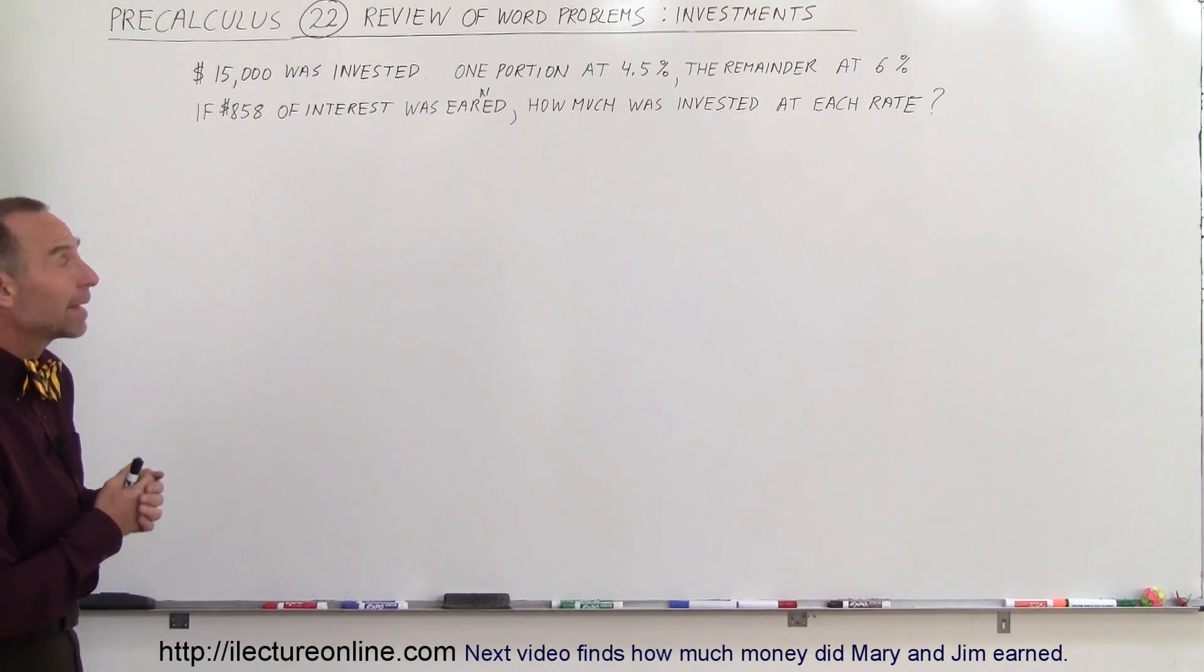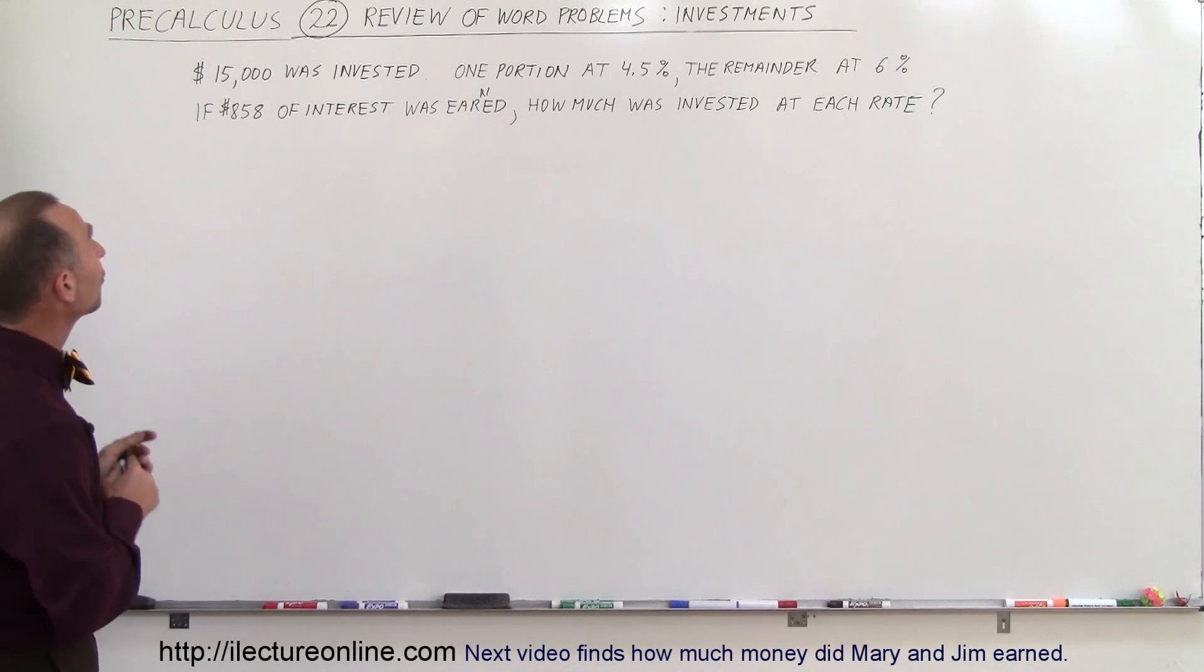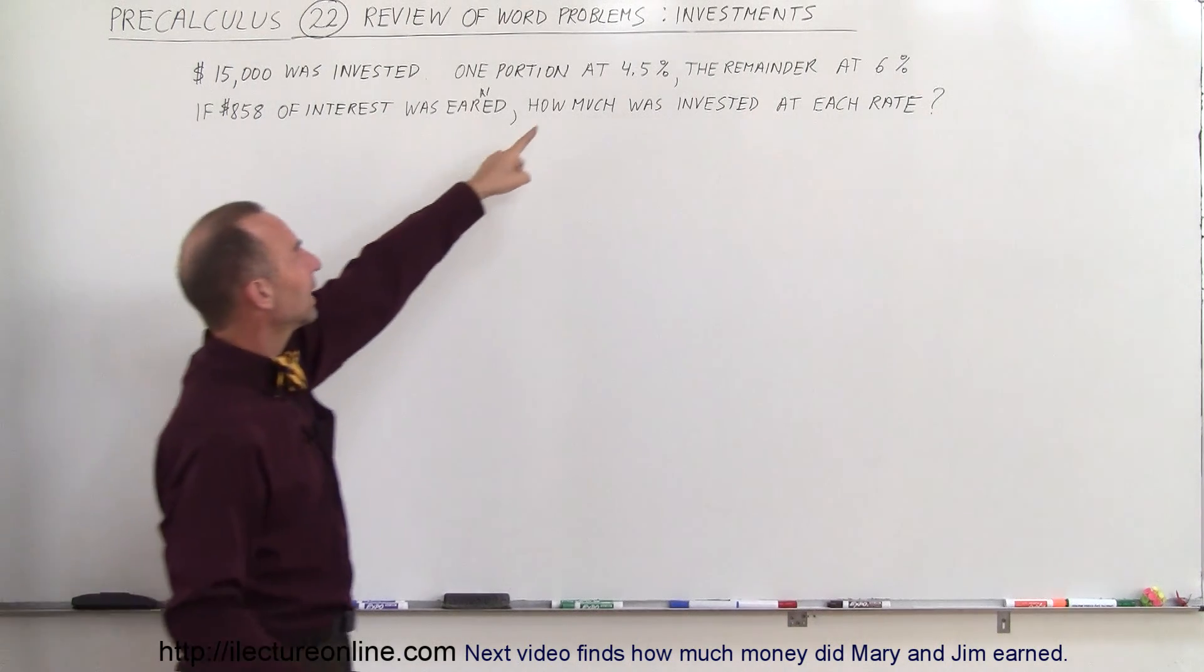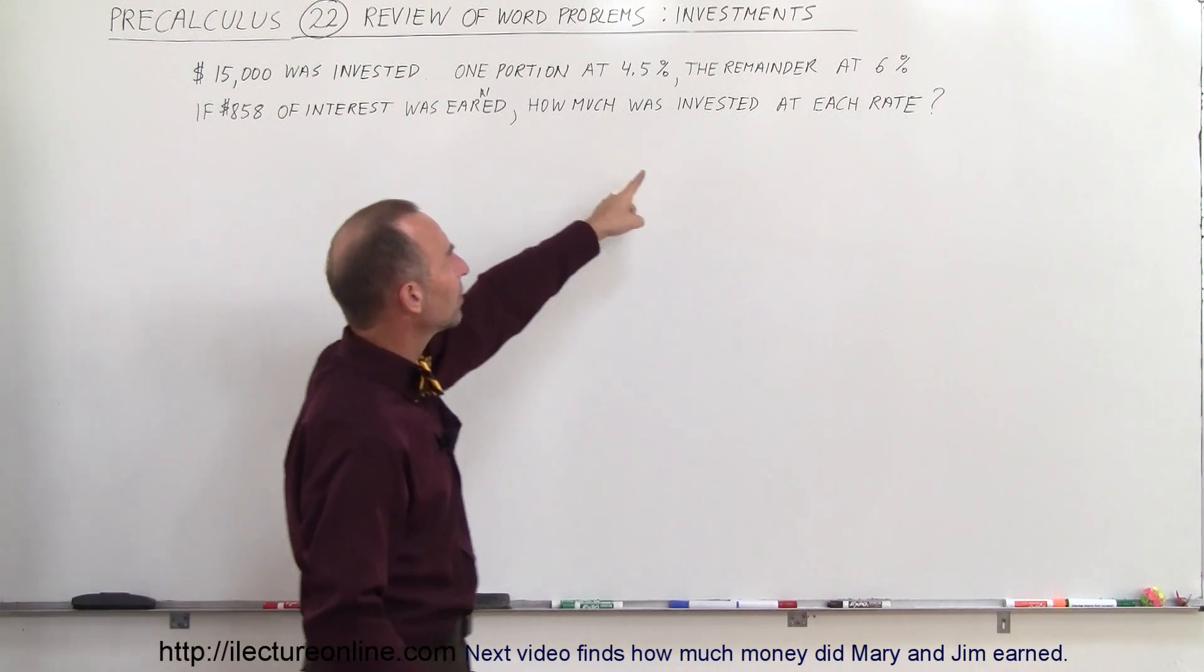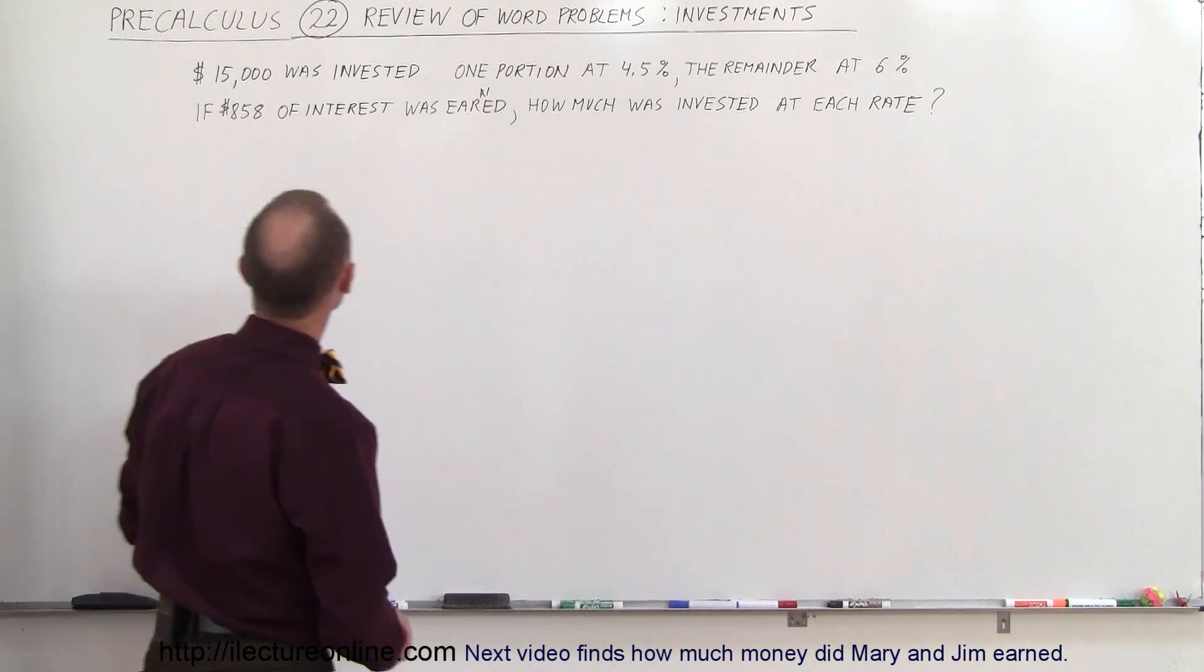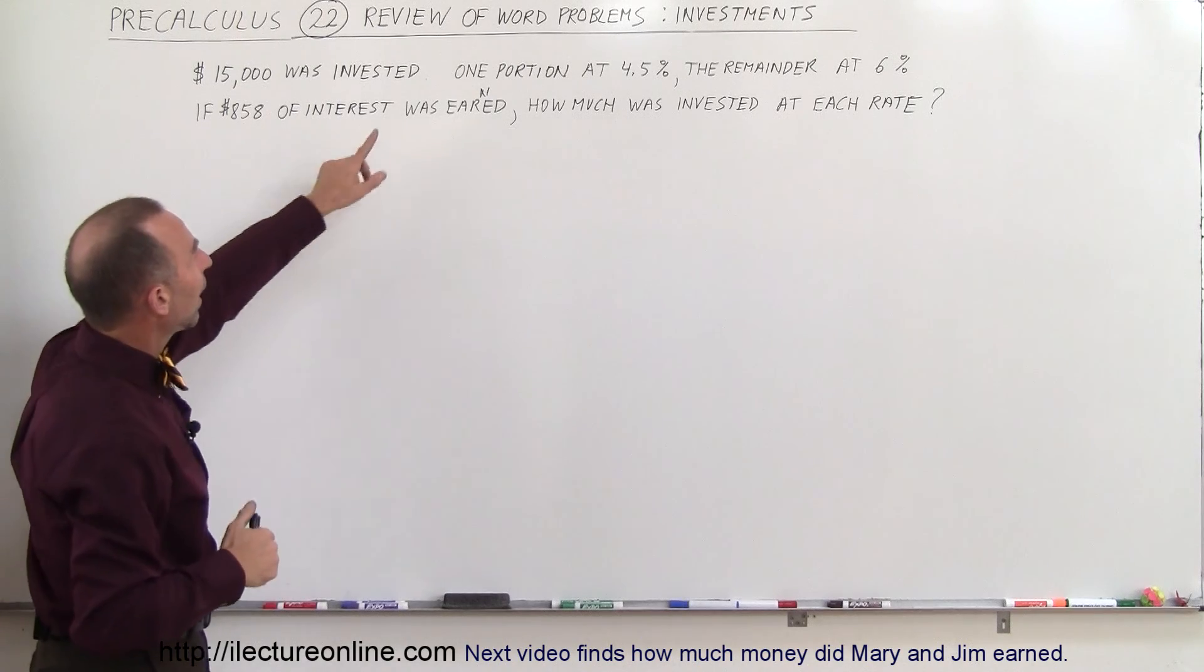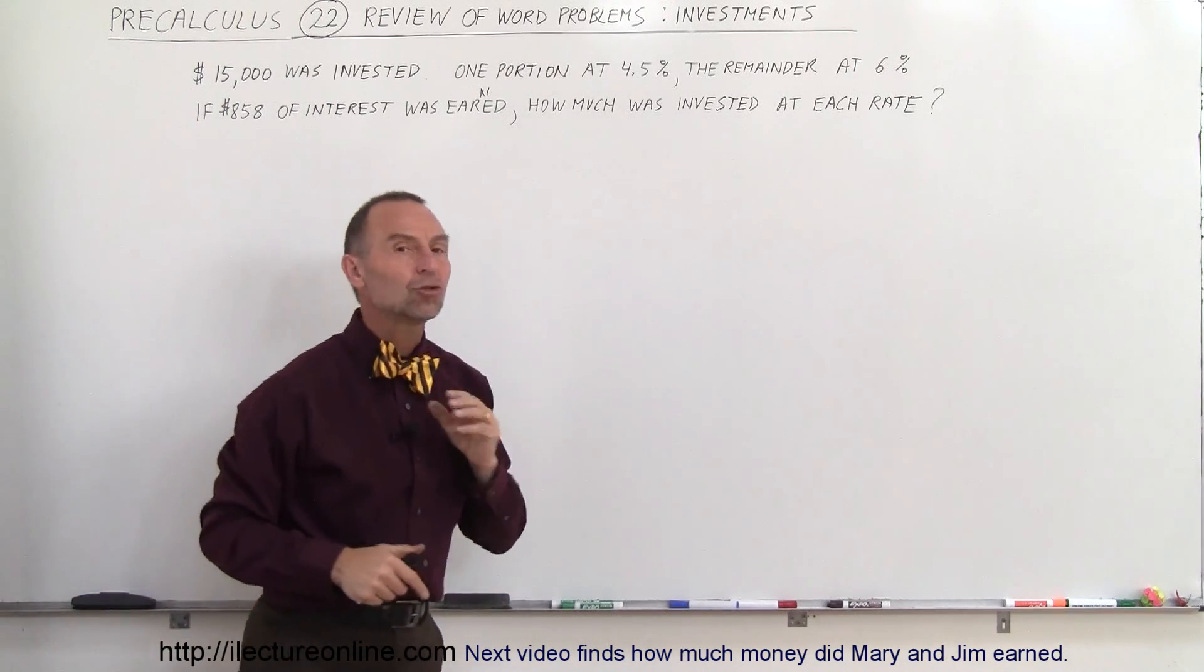Our next type of word problem is going to be on investments. So the problem reads as follows. We invest $15,000, one portion of it at 4.5% and the remainder at 6%. And if we earn $858 of interest, how much was invested at each rate?